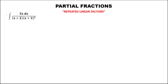For this problem, to find the integral of this rational function, we can solve this problem using partial fractions. First, we need to rewrite this as 5x over (x+2) times the quantity (x+3) squared. Then we can separate this denominator, but since we have repeated linear factors,